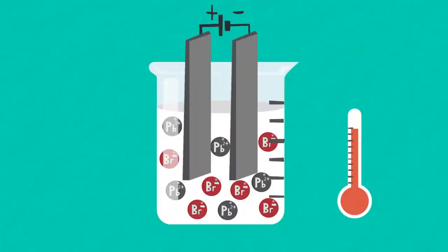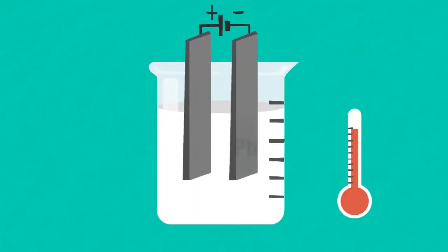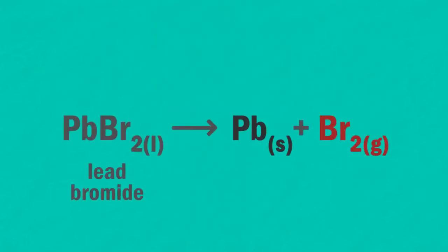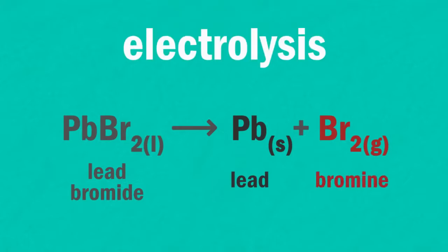Now if you were to do this in a laboratory, you'd see silvery lead forming on the cathode and a brown gas being given off at the anode. This is bromine. The lead bromide has been decomposed into lead and bromine by electrolysis.